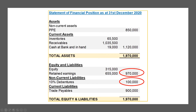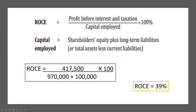When you calculate return on capital employed using the formula — profit before interest and tax divided by capital employed times 100 — that gives you 39%.